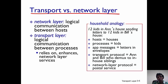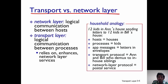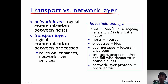Let's look at a household analogy to help understand this concept. Assume there are 12 kids in Ann's house and 12 kids in Bill's house, and Ann and Bill are responsible for carrying letters that these kids write to each other. The hosts are the houses, and the processes are the kids. There can be multiple kids in a house, just as there can be multiple processes on each host. Each application layer message is a letter that the kids write to each other.